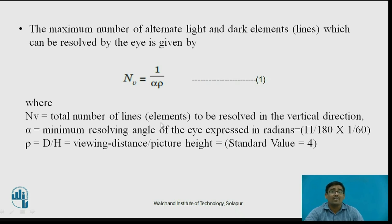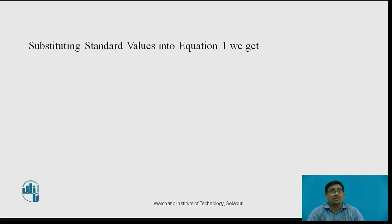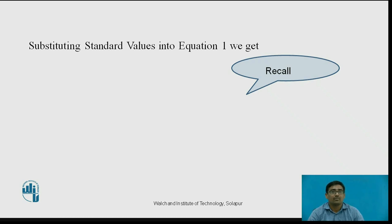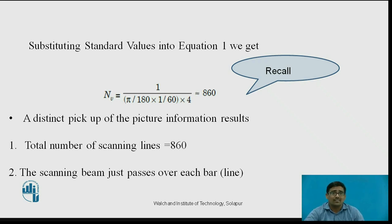Here, nv is the total number of fill lines or elements to be resolved in the vertical direction. Alpha is the minimum resolving angle of the eye expressed in radians, calculated as pi/180 × 1/60 — this is a standard value. Rho equals D divided by H, the viewing distance divided by picture height, with a standard value of 4. Substituting the standard values into equation 1, nv = 1 / (pi/180 × 1/60 × 4), we get 860. This means a distant pickup of the picture information results in a total number of 860 scanning lines, with the scanning beam just passing over each bar.